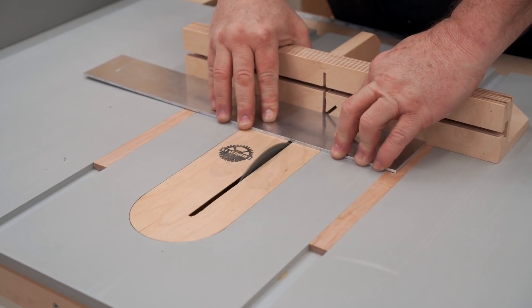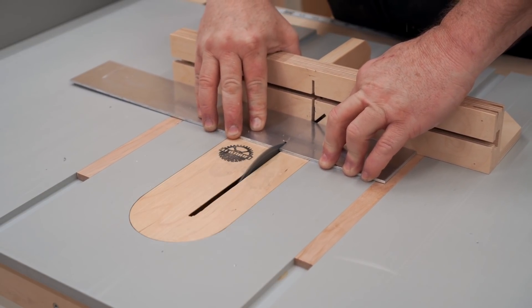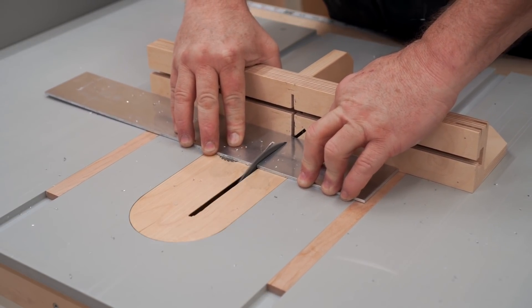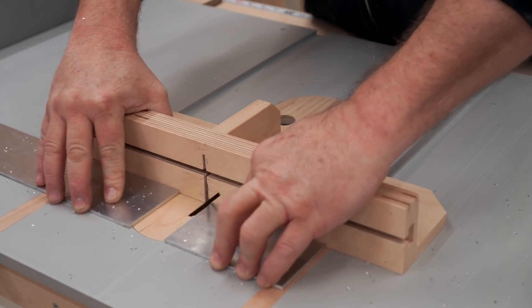Here's another short crosscut using my mini table saw sled. A lot of guys will use a miter saw for this, but it's a lot safer doing it this way on the table saw.